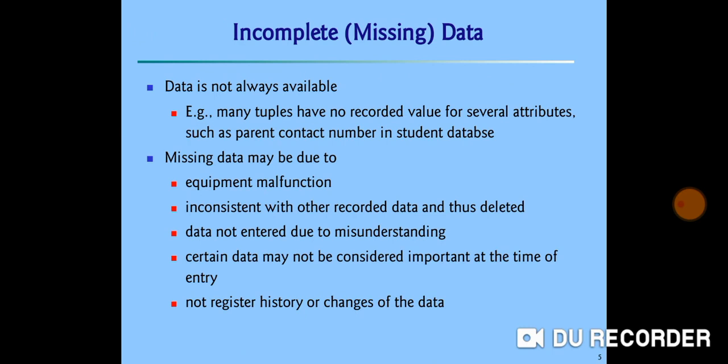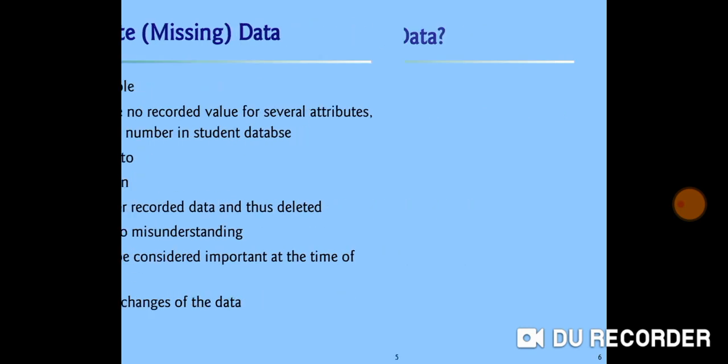Now, incomplete or missing data, we will see in detail. Data is not always available. Example, suppose many tuples have not recorded value for several attributes. Such as, suppose we are having student database. It not contains the parent contact number. Missing data may occur because of equipment malfunctions. Suppose we are taking data from sensors or cameras. Because of that equipment malfunction, we cannot get the data or inconsistent with other recorded data and thus deleted data not entered due to misunderstanding or certain data may not be considered important at the time of entry or not register history or changes of the data available.